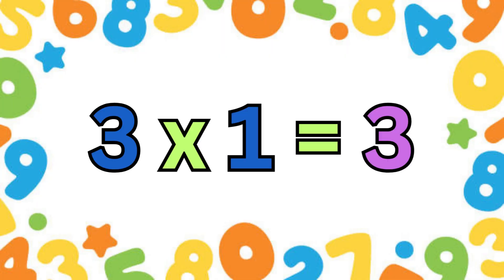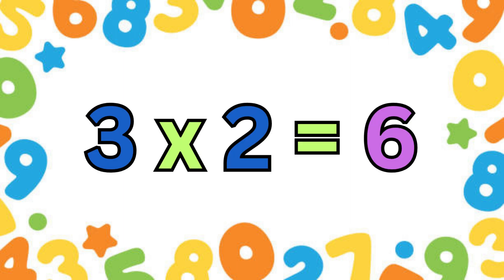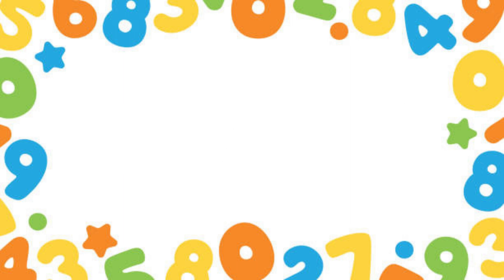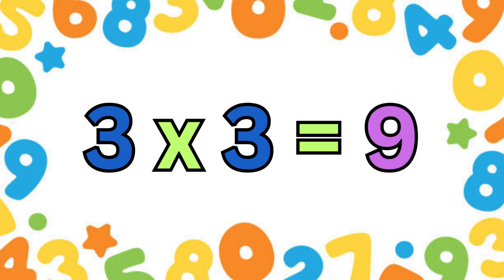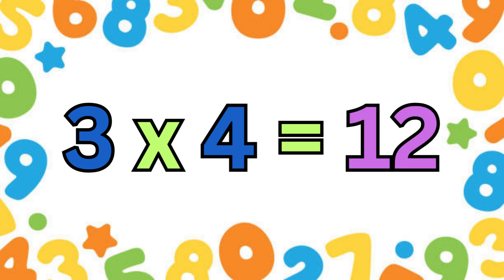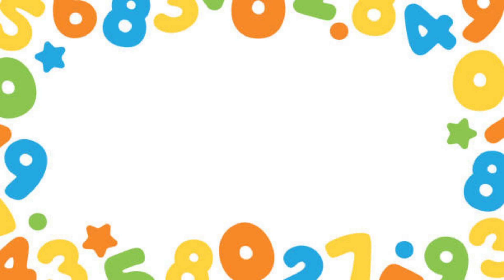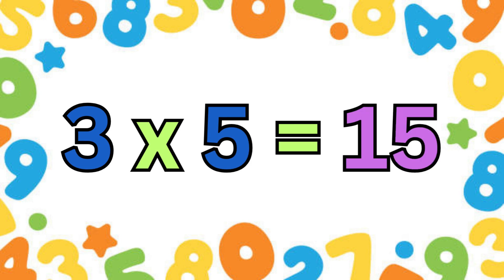Three ones are three. Three twos are six. Three threes are nine. Three fours are twelve. Three fives are fifteen.